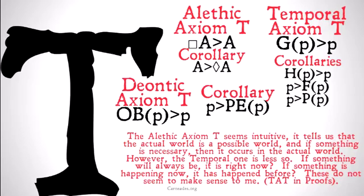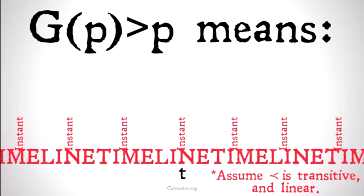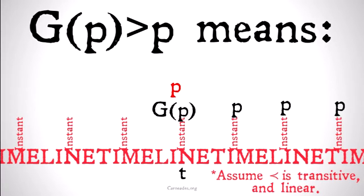Because they don't make sense to me, I'm generally not going to assume reflexivity of precedence. Basically, if it's always going to be the case that P implies P, it means that because it's always going to be the case that P, P is also the case now. If I'm saying that something happened in the past, I'm saying that that thing could have also happened now.